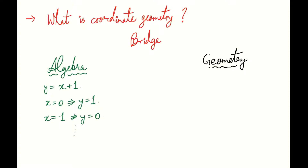This was for the algebra side. On the geometry side, suppose we have this coordinate axis. We can plot this pair of points as follows. The first point is (0, 1), which is plotted here. The second point is (-1, 0), which is plotted here. And we can plot many more points and finally be able to draw a line. This line has the equation y equals x plus 1.